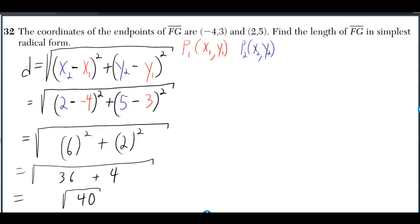The coordinates of the endpoints of FG are (-4, 3) and (2, 5). Find the length of FG in simplest radical form.